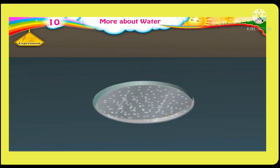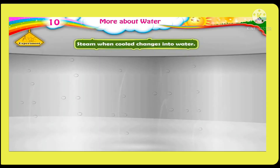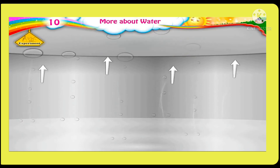Now hold a lid in the steam coming from the boiling water using a pair of tongs. Observe the lid after 5 minutes. What do we see? We see water droplets on the lower side of the lid. Why does this happen? Steam, when cooled, changes into water. The lid held in the steam was cool, so the steam that comes into contact with the cold lid cools and forms droplets of water.